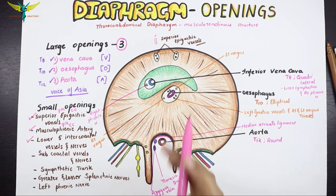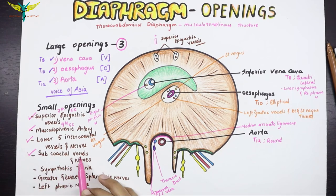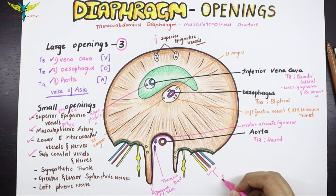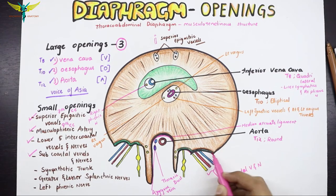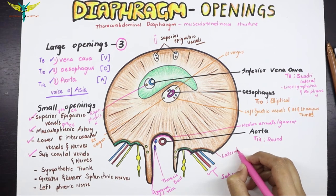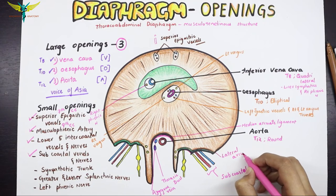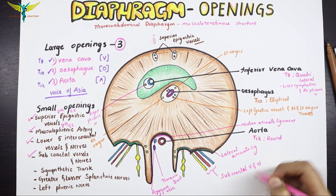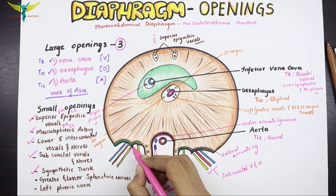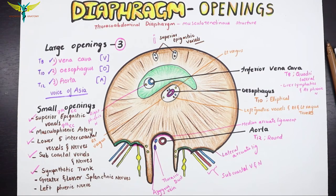The lower five intercostal vessels and nerves pass between the costal origins of the diaphragm and the transverse abdominis muscle. The subcostal vessels and nerves pass behind the lateral arcuate ligament. The sympathetic trunk passes below the medial arcuate ligament.